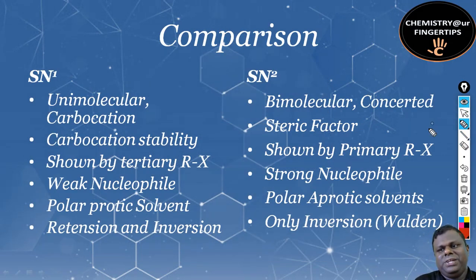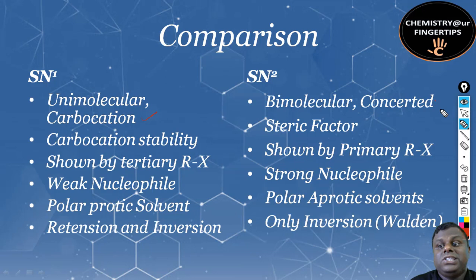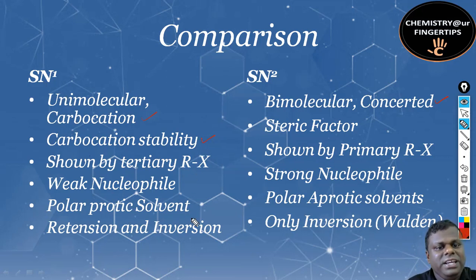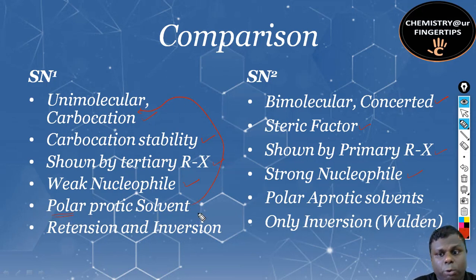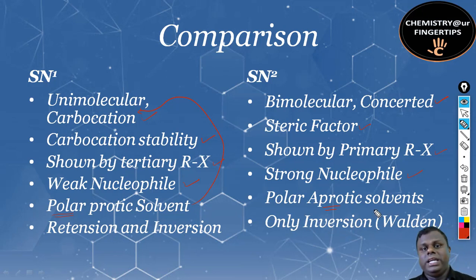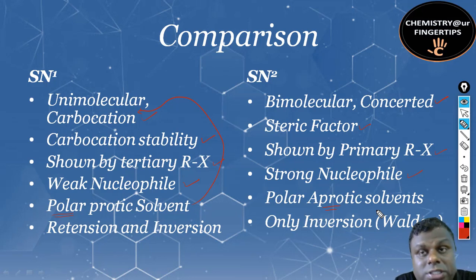Now for the comparison: SN1 is unimolecular with a carbocation mechanism; SN2 is bimolecular with a concerted mechanism. SN1 depends on carbocation stability; SN2 depends on the steric factor. SN1 is shown by tertiary alkyl halides; SN2 by primary. SN1 requires a weak nucleophile; SN2 requires a strong nucleophile. Polar protic solvents favor SN1 as they stabilize the carbocation; polar protic or no solvent for SN2. SN1 gives retention and inversion; SN2 gives only inversion.